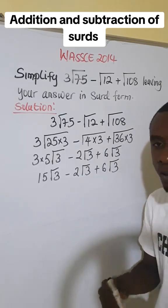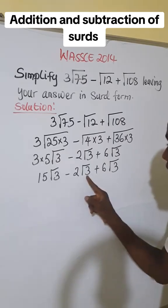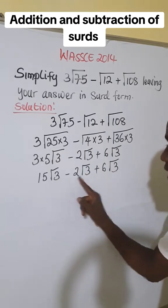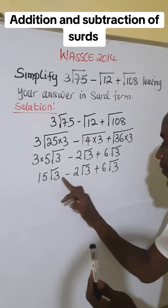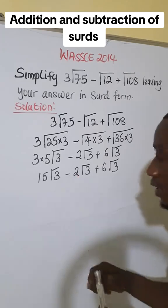Now we are free to add or subtract. Because whenever you are adding or subtracting surds, you must ensure that they are in the same form. This is √3, √3, and √3. So we can now simplify the outer numbers.